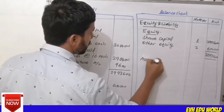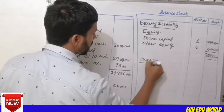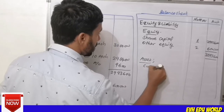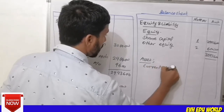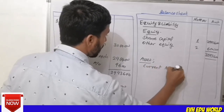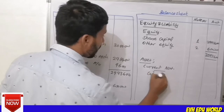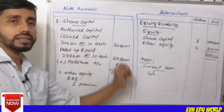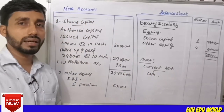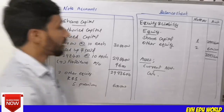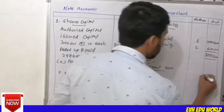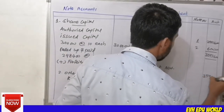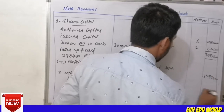On the asset side, we have current assets — cash and bank balances. Not all of the total is in cash. The total balance sheet figure comes to approximately Rs.30,93,600, balancing both sides of the balance sheet.